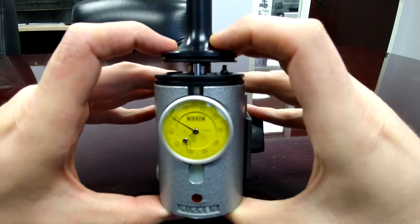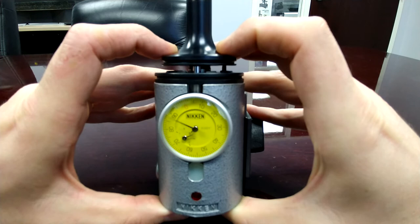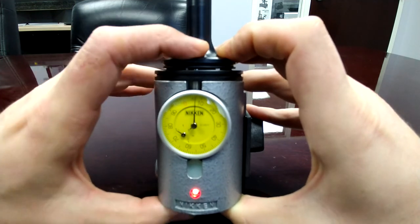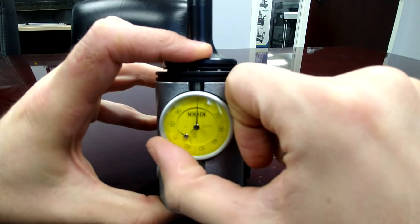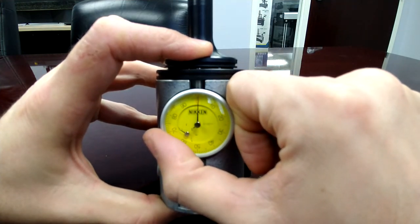So it's really simple. All I'm going to do is press down until the plunger stops, and then I'm going to rotate my dial until it is at zero.